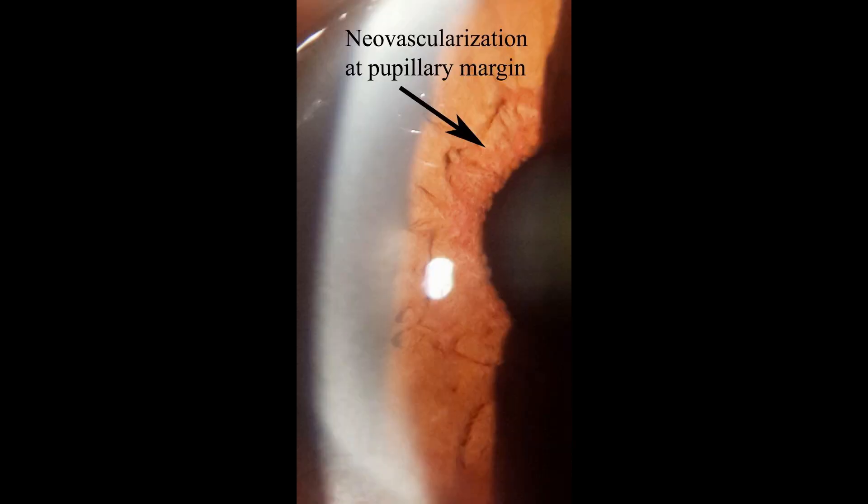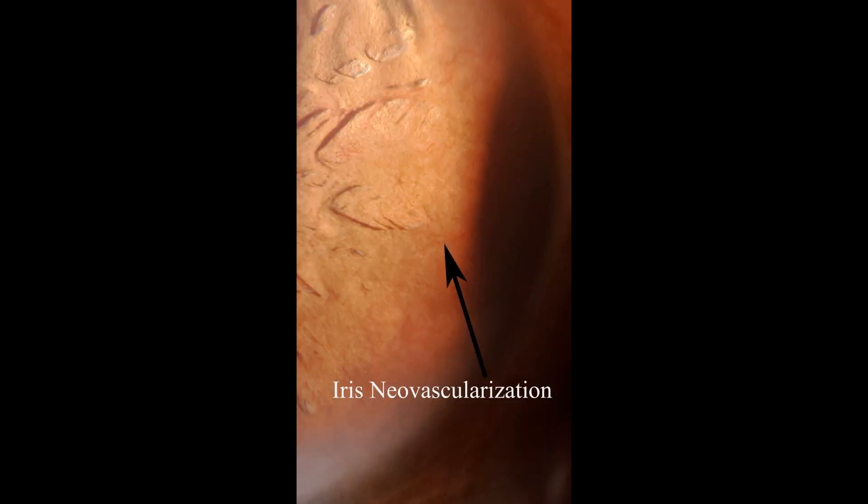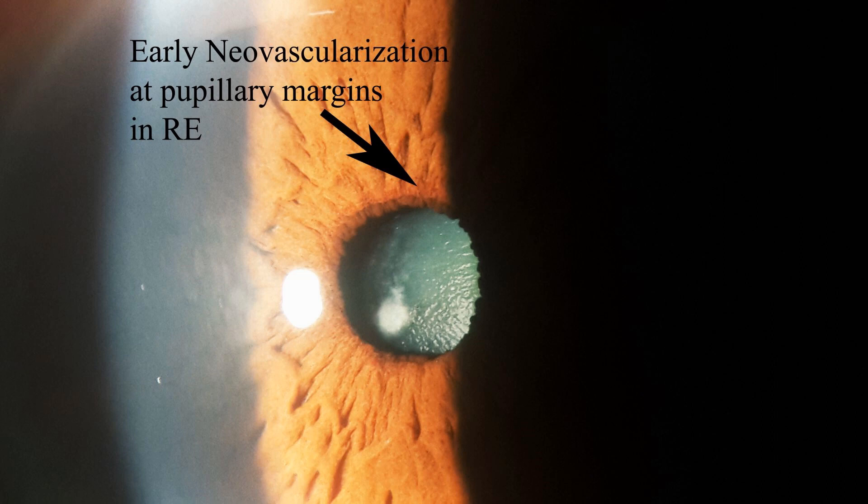Here is a patient with persistent hyaloid artery. In this gonioscopy video, the ciliary processes are clearly made out through the dialysis in a patient with angle recession and iridodialysis following blunt trauma. This is a patient with neovascular glaucoma. Neovascularization of the pupillary margin is evident in this photograph taken with the smartphone. Gonioscopy video shows open angle with new vessel in the angle and couple of goniocysts.